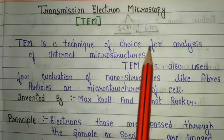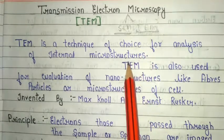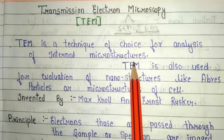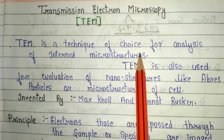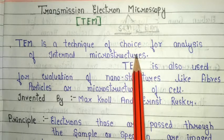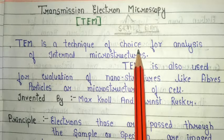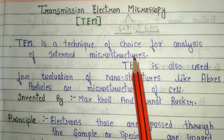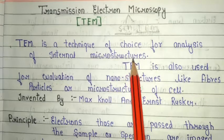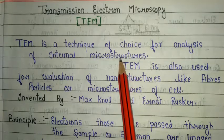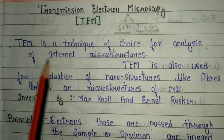Why do we use transmission electron microscopy? In general we use optical or light microscopes in school or college labs, but when we want a highly magnified image with very high resolution power, we use TEM or SEM. Both are very good types of microscopy which give detailed explanations of the microstructures of any kind of sample.